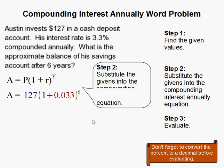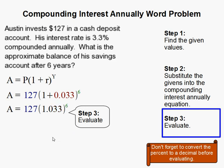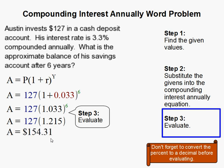You usually use a calculator for these because the math is pretty tedious. First, I added 1 and 0.033, then raised 1.033 to the 6th power, which becomes 1.215. Then I multiplied that by 127 and got $154.31. And that completes our problem.